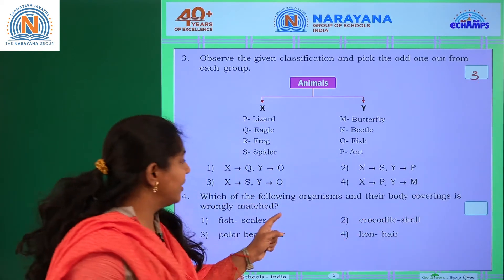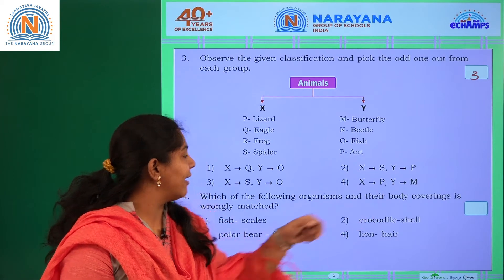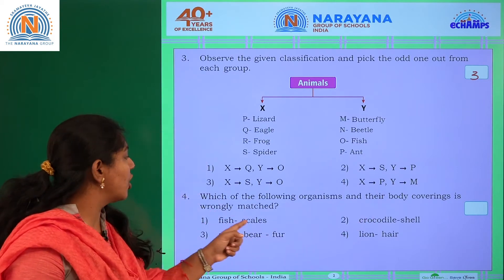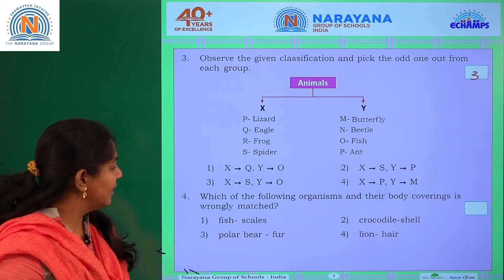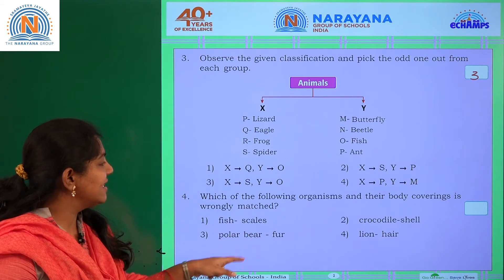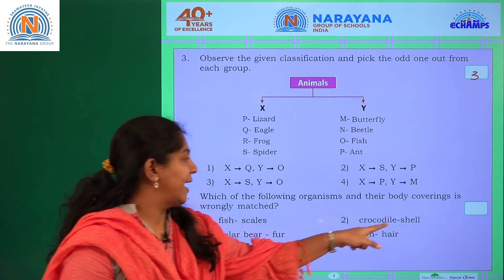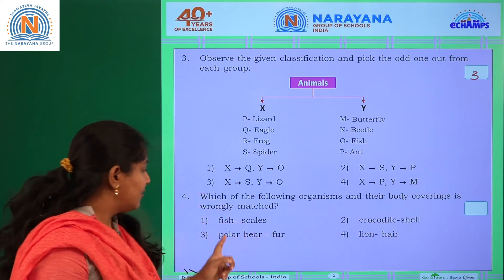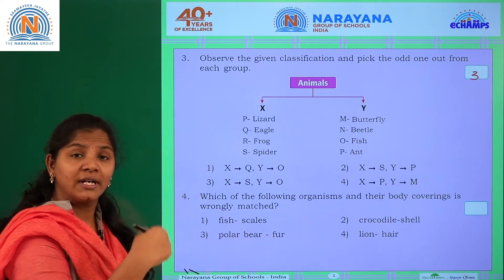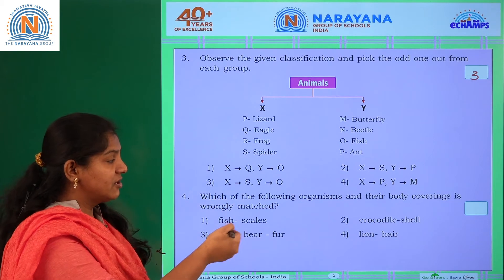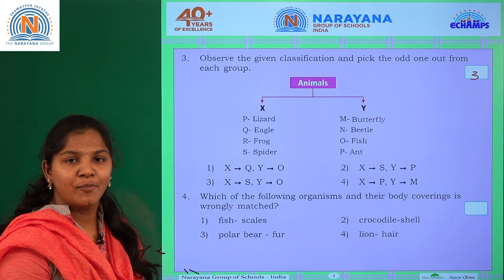Which one of the following organisms and their body covering is wrongly matched? Options include fish-scales, crocodile-shell, and polar bear or lion-hair. The wrongly matched pair is crocodile and shell — that is option two.